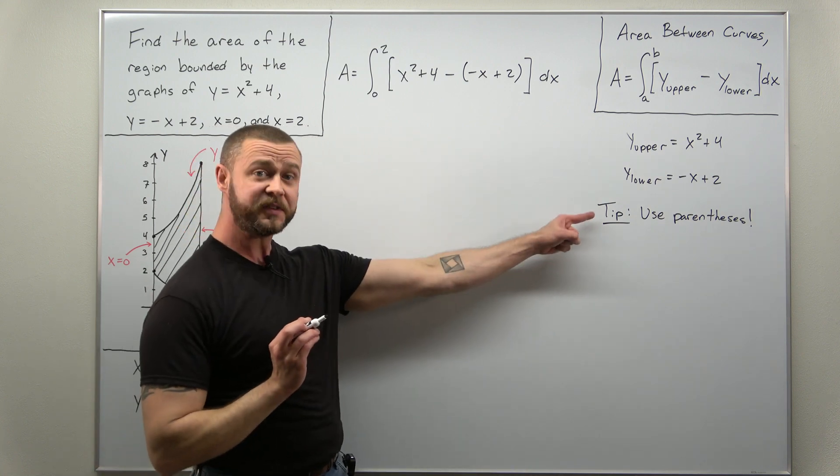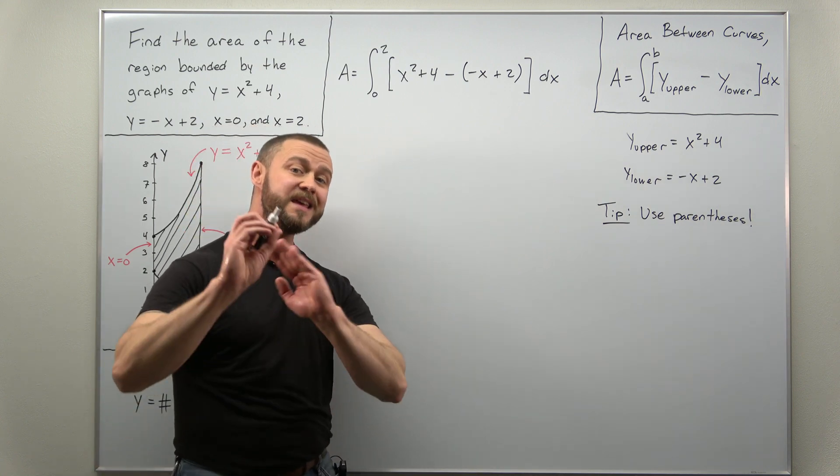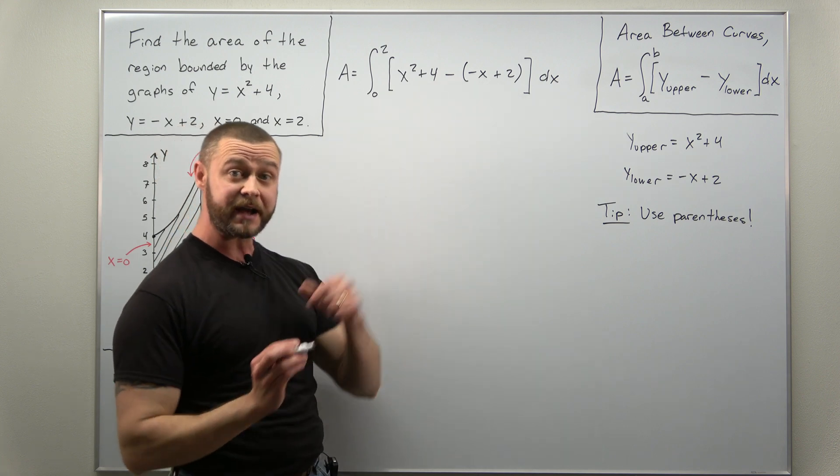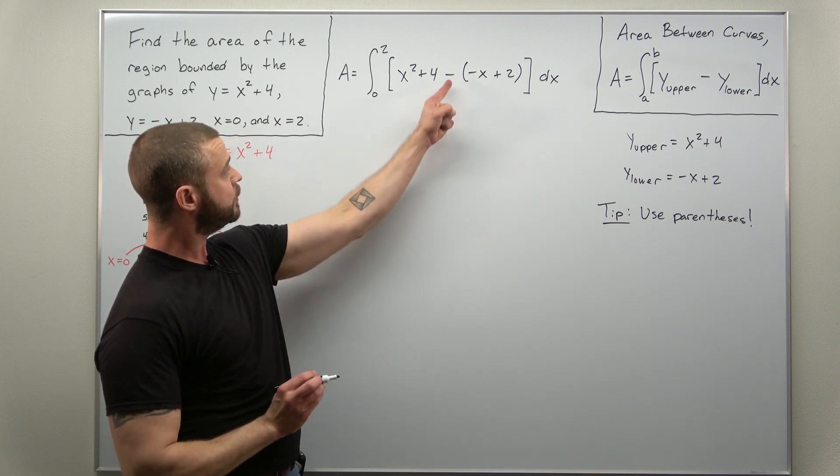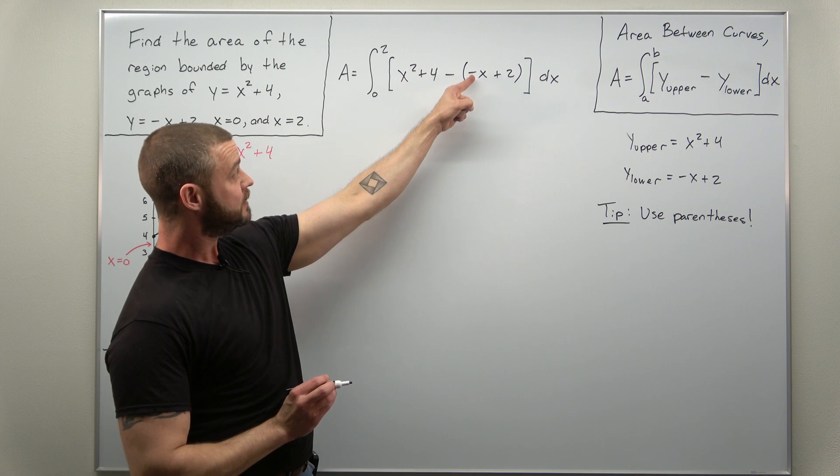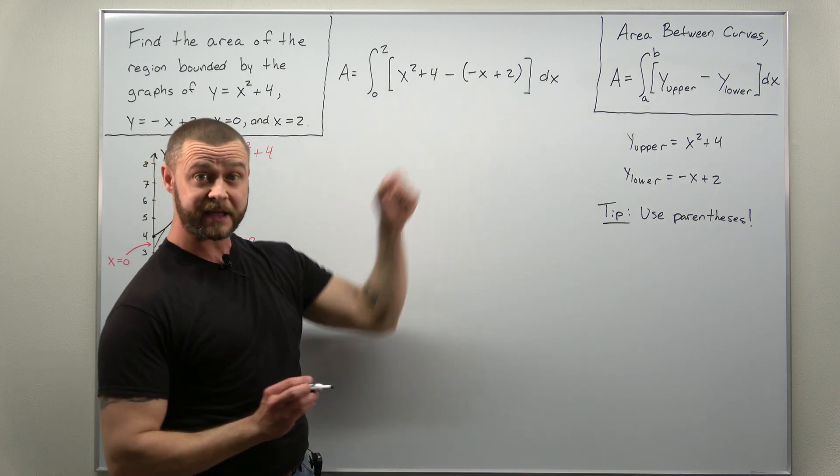And if you always use parentheses you should be able to easily avoid any sign errors there. So notice that negative there, distribute that you'll get positive x but negative 2.